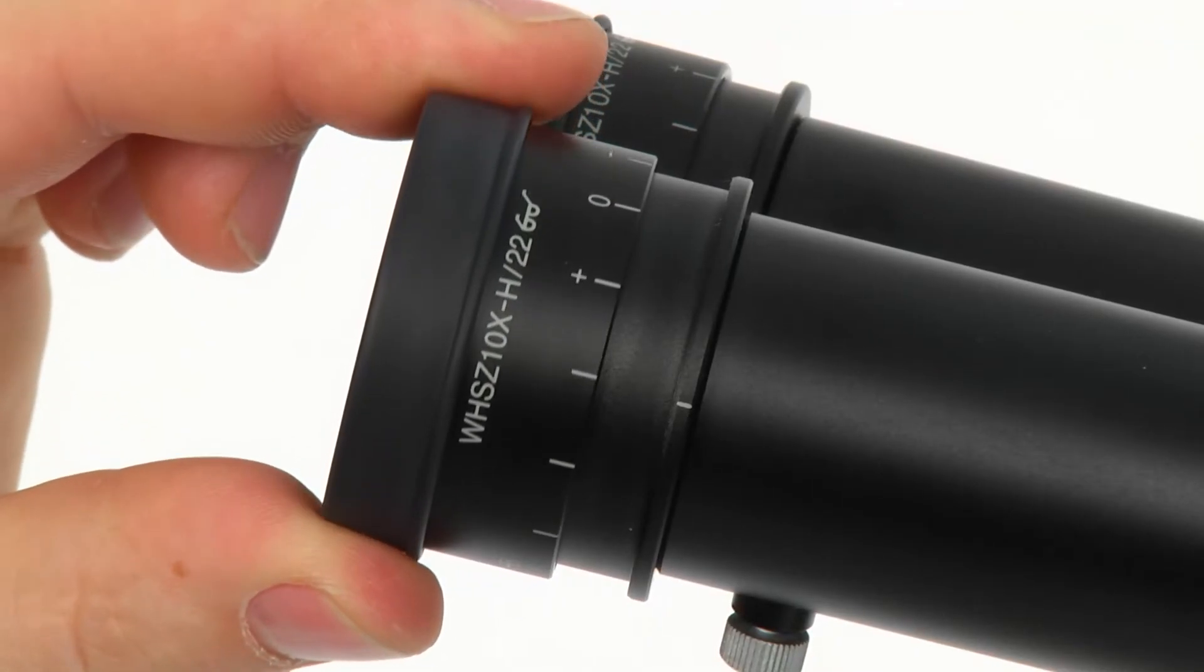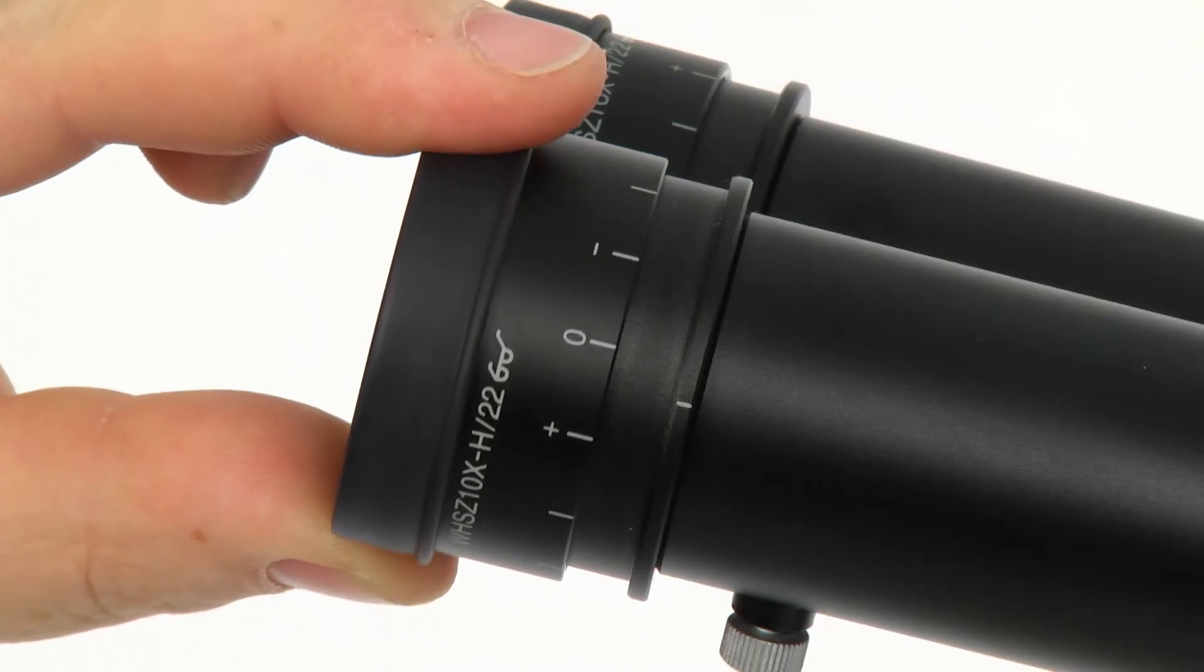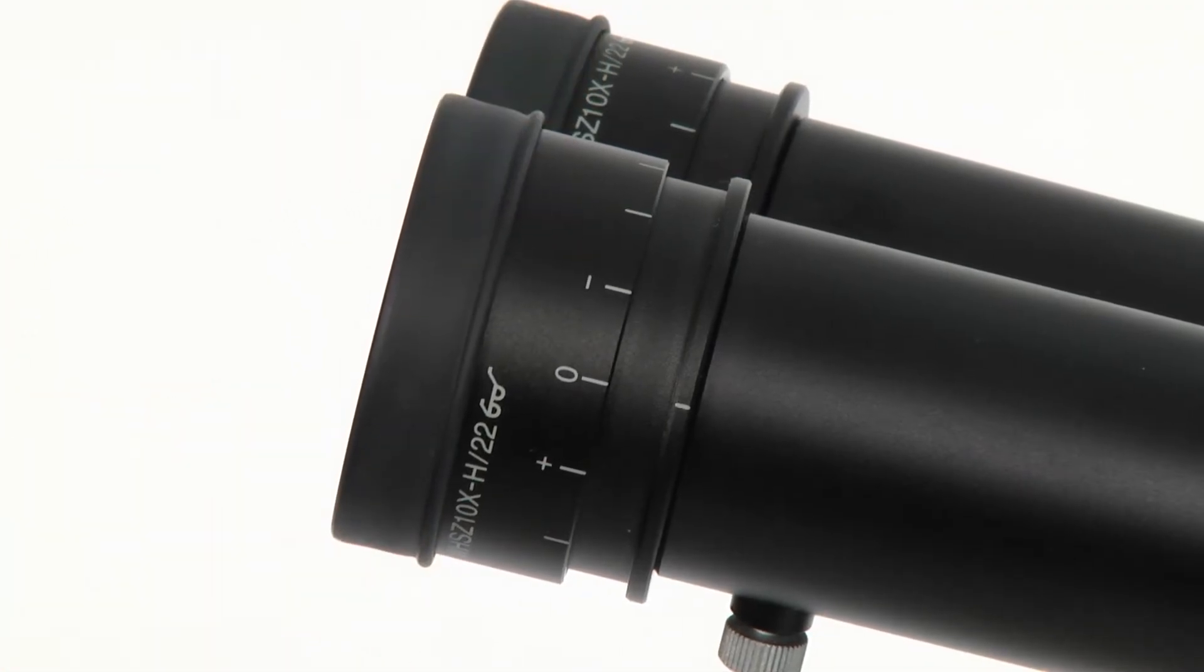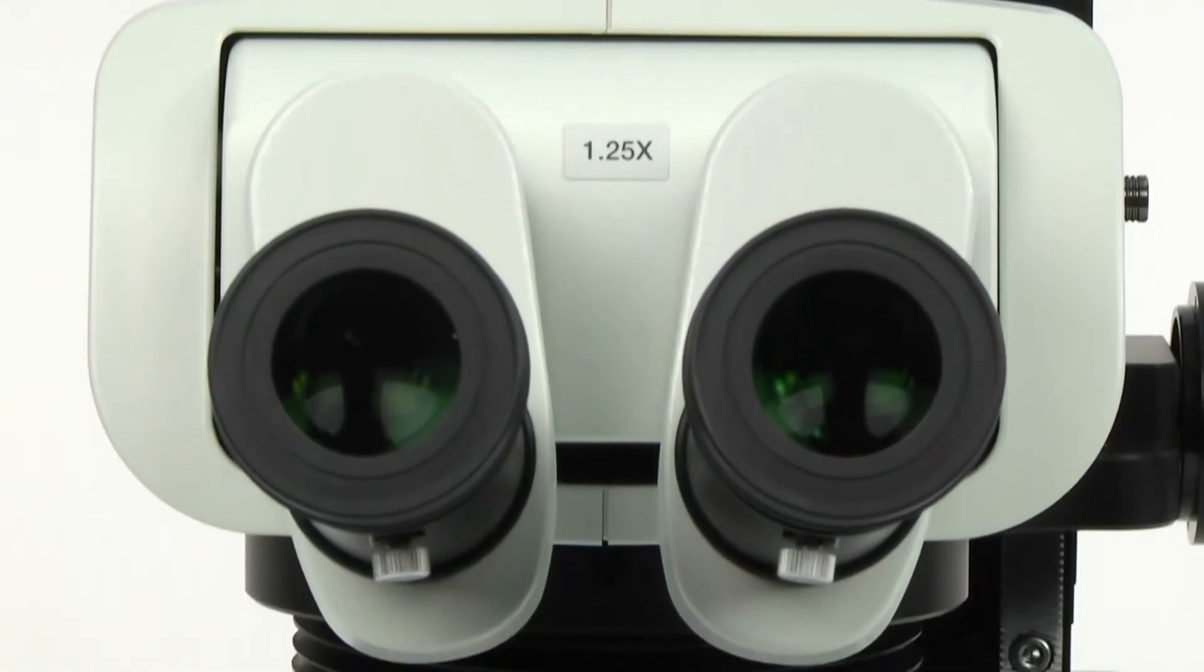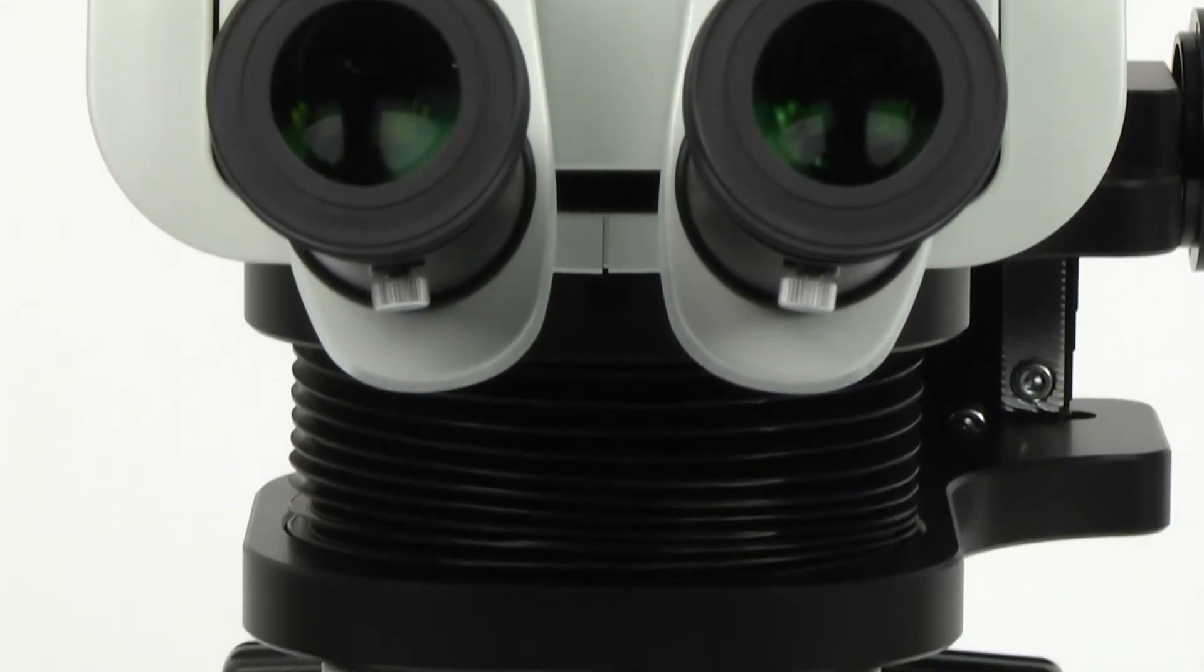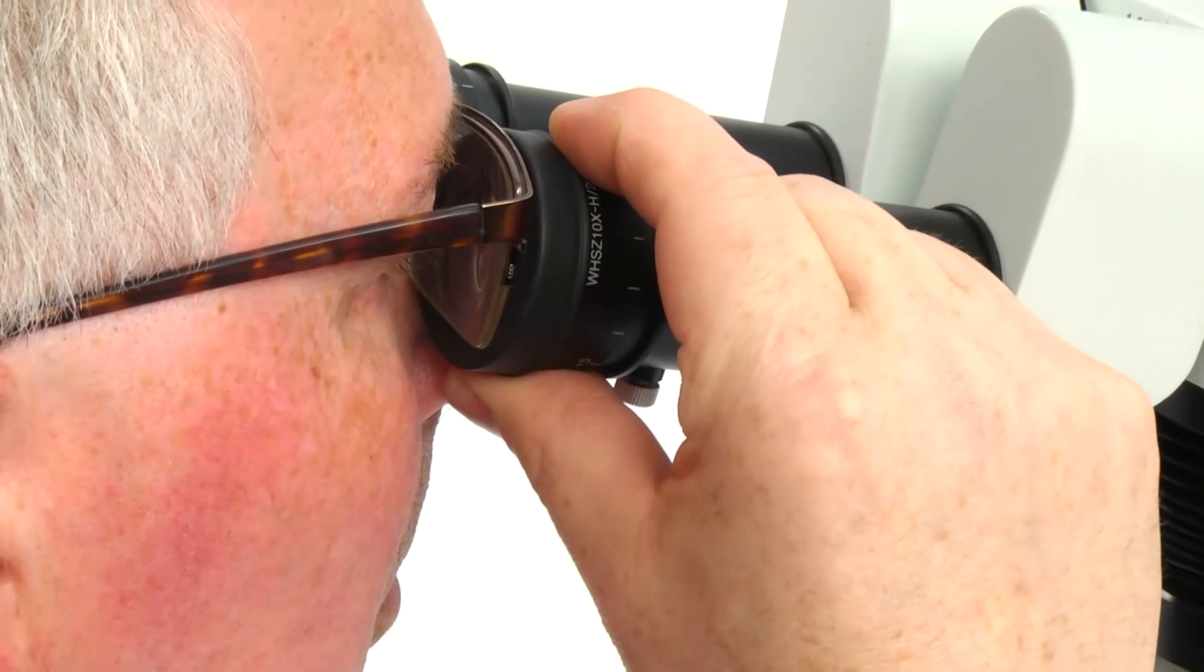To make the adjustment, turn the diopter rings of the left and right eyepieces to position zero. For operators with perfect 20-20 vision, this is the correct setting. All others require the following adjustments.